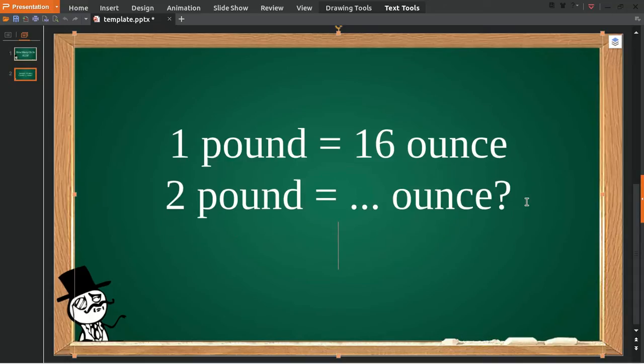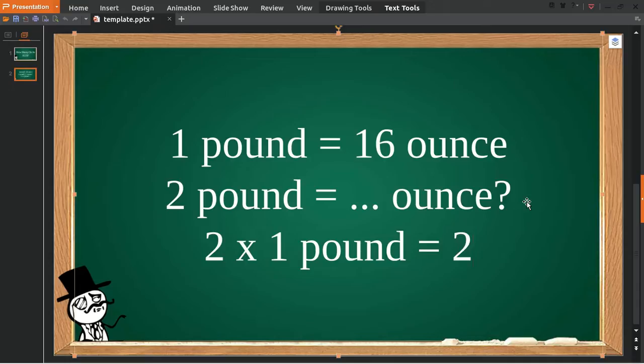To answer this question, the first thing we need to do is multiply the 2 pounds from here with this number. Okay, then it's equal to—because we have 2 on the left, we must have 2 on the right as well. And then we multiply the 2 with this number.